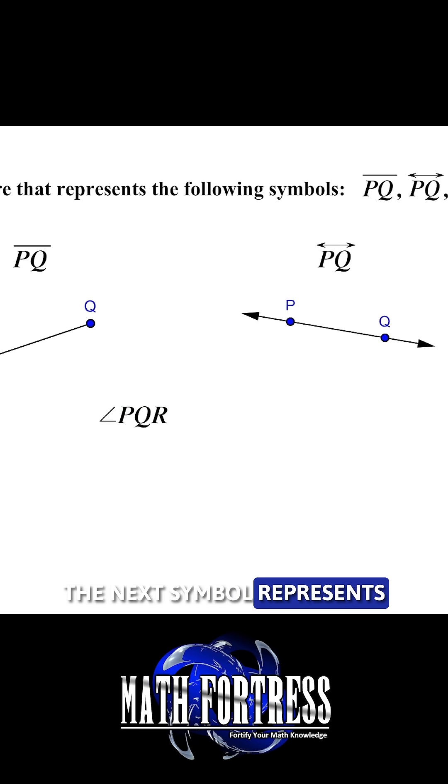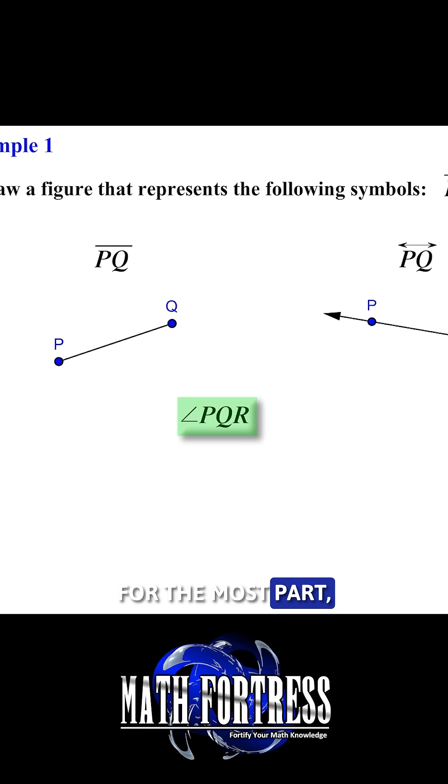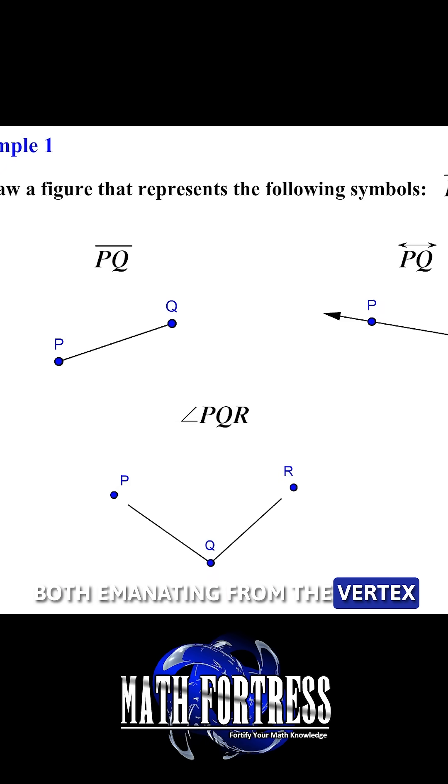The next symbol represents an angle. For the most part we denote angles using three points, the middle letter always represents the vertex so we go ahead and draw point P, Q and R, then we draw two rays both emanating from the vertex Q as follows.